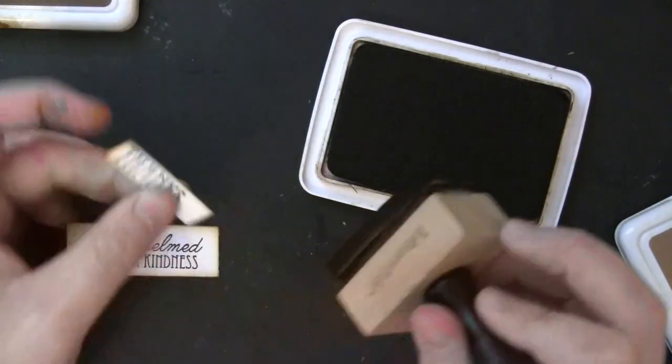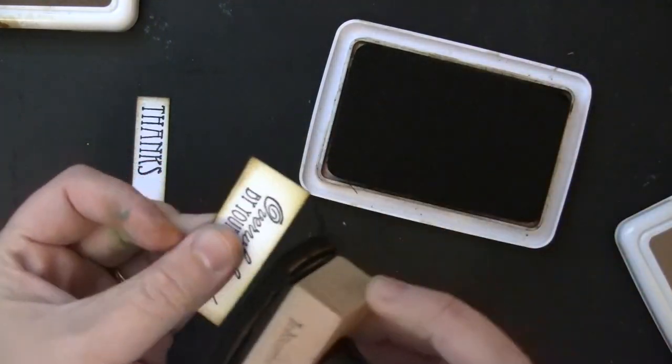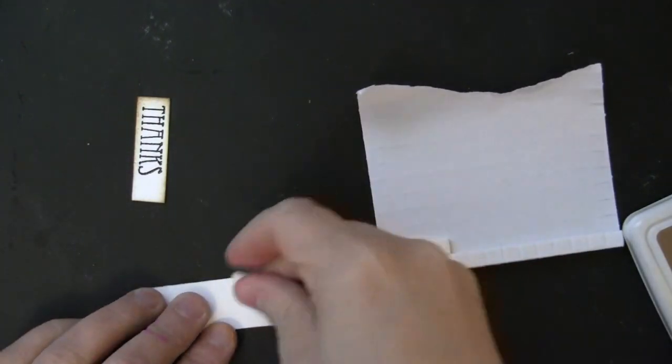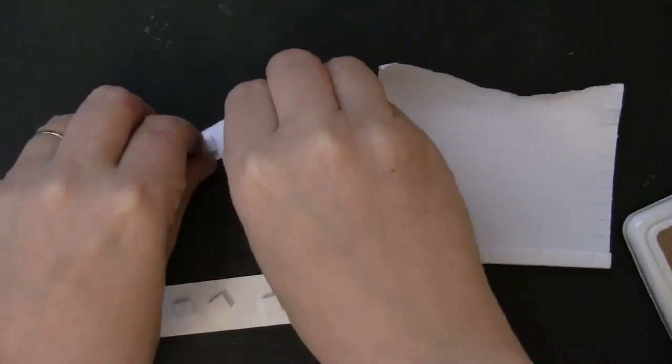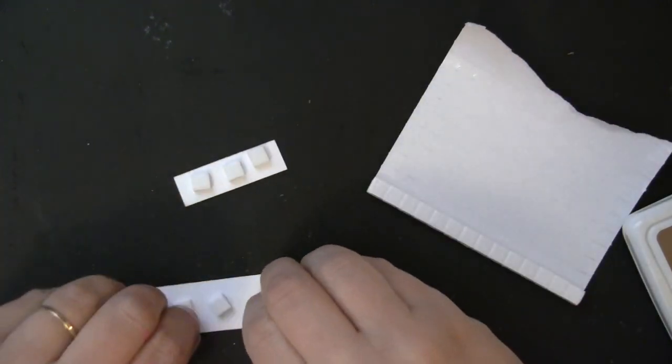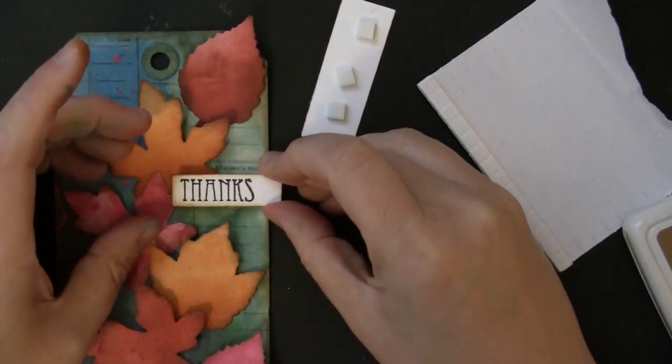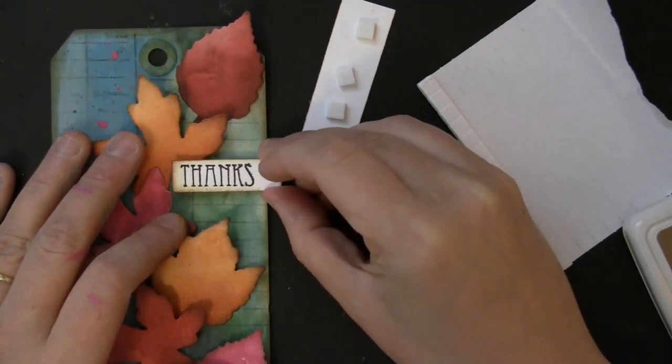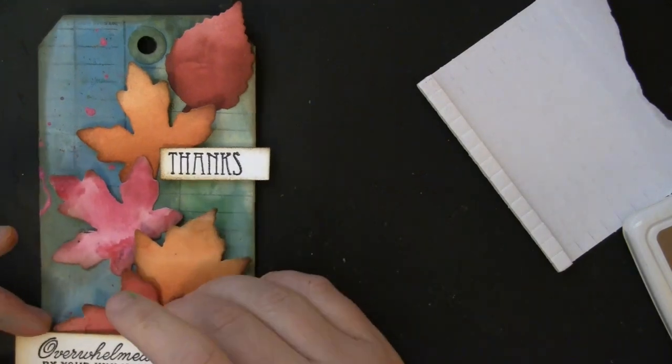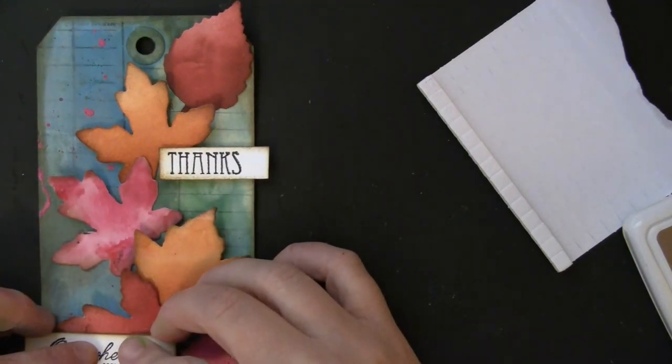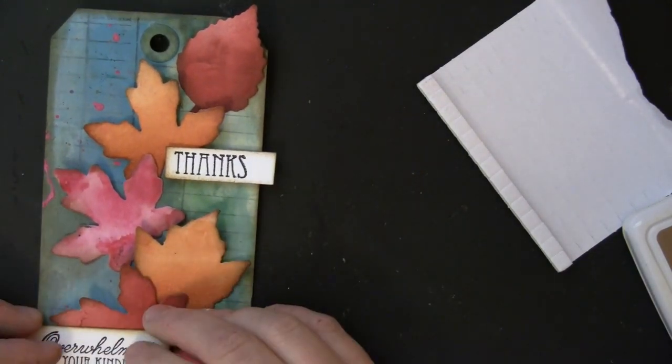and then a small touch of the Potting Soil, the darker color ink. With that, I'm just barely touching the edge, but it will show once it's layered onto the tag. I'll add these onto the tag using foam squares.